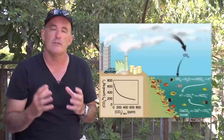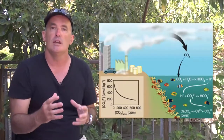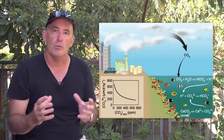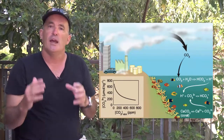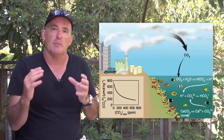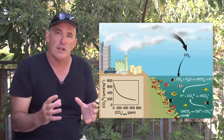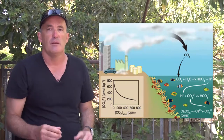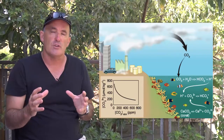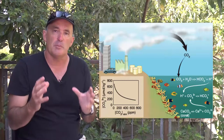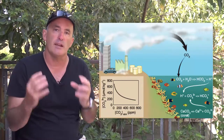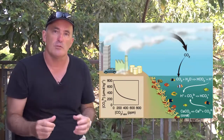Coral reefs also face challenges from ocean acidification. Rising levels of carbon dioxide have driven large-scale changes to the pH and carbonate chemistry of the world's oceans. As carbon dioxide has moved into the upper layers of the ocean, the pH has decreased along with the concentration of carbonate ions. Reduced carbonate ion concentrations make the process of precipitating calcium carbonate into the skeletons of corals and other organisms much more difficult.